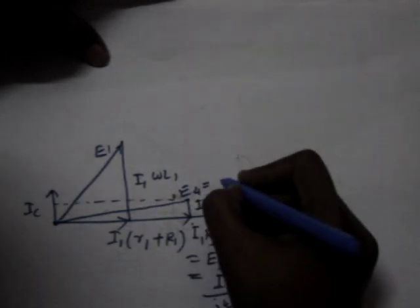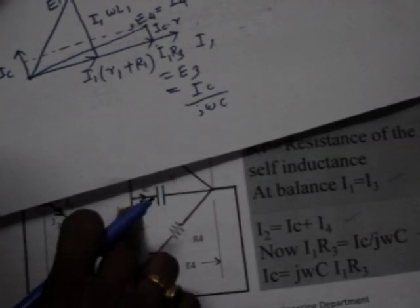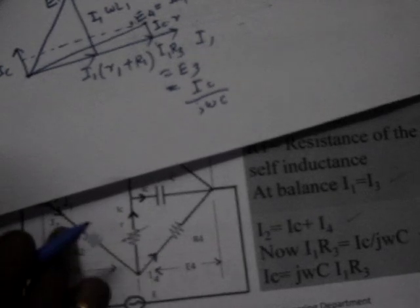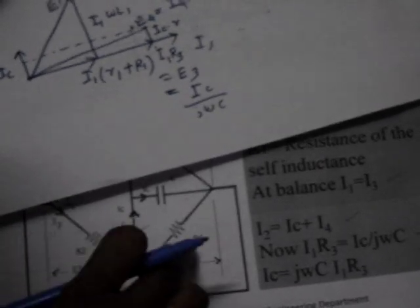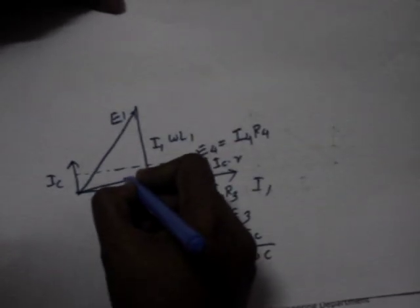E4 is equal to I4 R4. Now I4 is equal to I2 minus Ic, or I2 is equal to I4 plus Ic. This one is equal to I4.